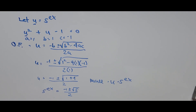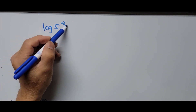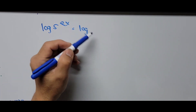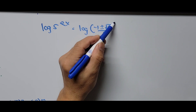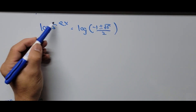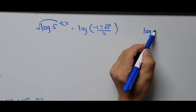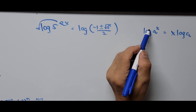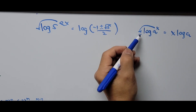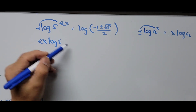From here we take the logarithm on both sides. The equation becomes: log of 5 to the power of ex equals log of the quantity negative 1 plus or minus the square root of 5, divided by 2. Using the logarithm exponent rule — log of a to the x equals x times log of a — the exponent comes down as a coefficient, giving: ex times log of 5 equals log of negative 1 plus or minus the square root of 5, divided by 2.